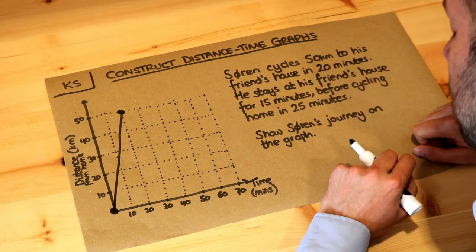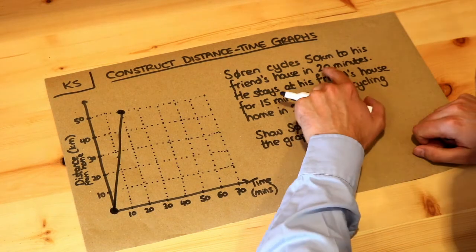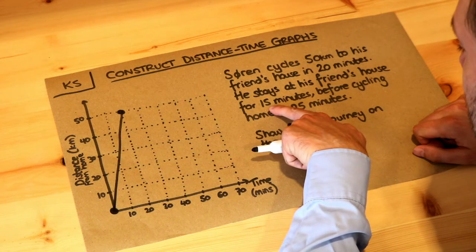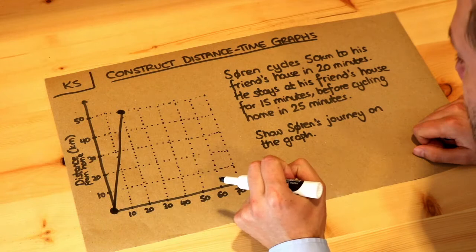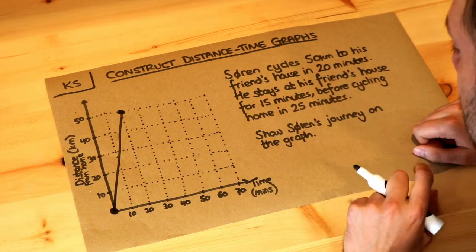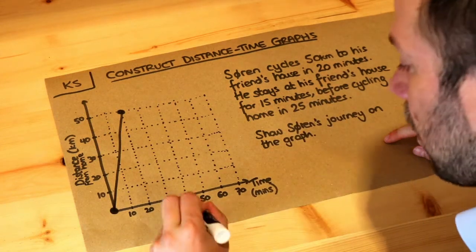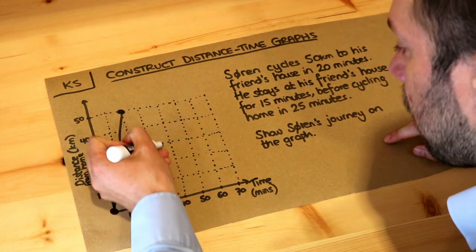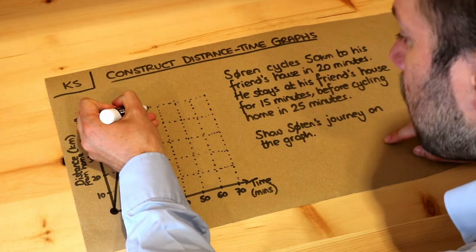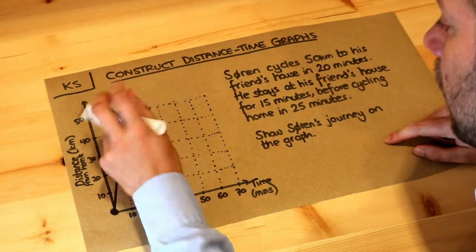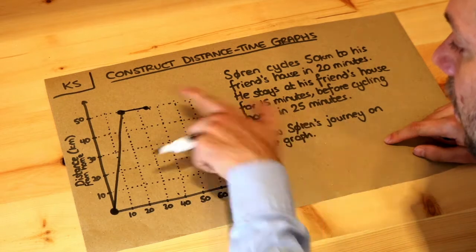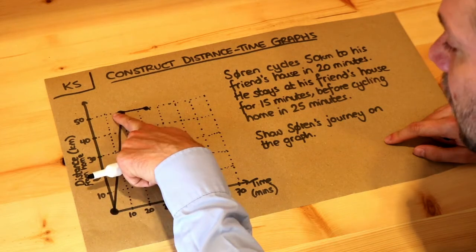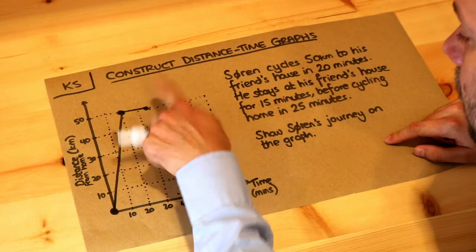Now it says he stays at his friend's house for 15 minutes. 20 minutes have passed since he left his house, and he's then staying 15 minutes at his friend's house, which takes us up to 35 minutes because 20 plus 15 is 35. At the 35-minute mark — halfway between 30 and 40 — he's still at his friend's house, still 50 kilometres from home. He's not moving, so we remain horizontal on our graph.